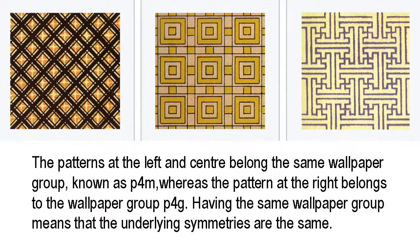Related to the concept of tilings is something called wallpaper groups, of which there are 17. A wallpaper group is a mathematical way of classifying a two-dimensional repetitive pattern on the basis of the symmetries it displays. There are just four basic symmetry operations in two dimensions: reflection, rotation, translation, and glide symmetry. Every wallpaper group contains two distinct translations so that any tiling belonging to it can repeat endlessly and periodically to cover the entire plane. It may also have other types of symmetry, including a centre of rotation, an axis of reflection, and an axis of glide reflection. It's been widely claimed that the many different tilings at the Alhambra include representatives from all 17 wallpaper groups, although some mathematicians dispute this.